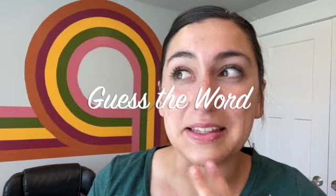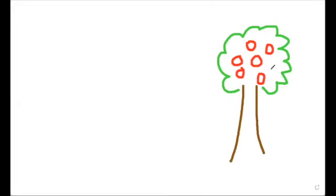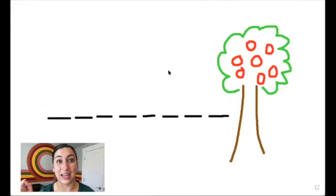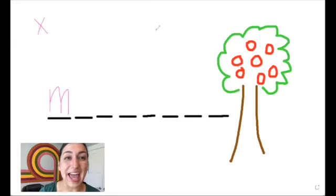Onto the next activity, which is guess the word. When I was little, this was called hangman, but it probably isn't politically correct anymore to call it that, so we call it guess the word now. We play a little bit differently too — I've adapted it to make it a little bit less gruesome. For this, you will just need a whiteboard, or you can draw on the screen using the whiteboard function on Zoom, or in VIP Kid you can use the last blank slide. I draw a tree with seven apples, and then I draw a line for each letter in the word they will be guessing.